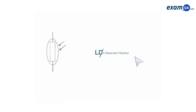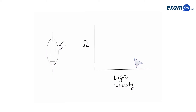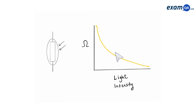With an LDR, you have to memorize how it works. Let's look at how it behaves in different light intensities. With an LDR, when light intensity is low, the resistance will be high. And when light intensity is high, the resistance will be low.